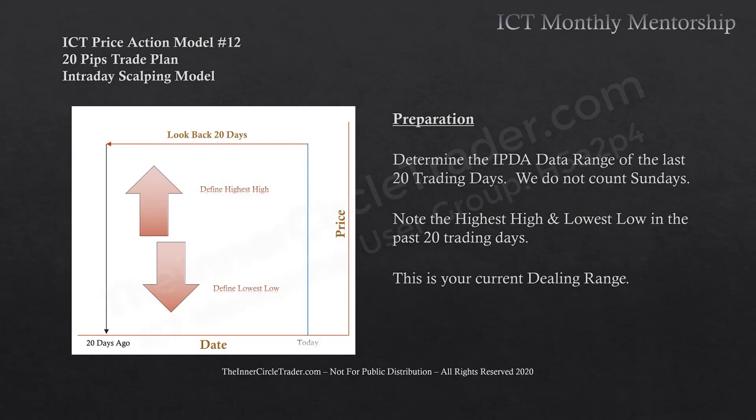In preparation, we're going to determine the IPTA data range of the last 20 trading days. We're not requiring 40 or 60 days to look back — only the last 20 trading days, and we do not count Sundays. Note the highest high and the lowest low in the past 20 trading days — this is your current dealing range.